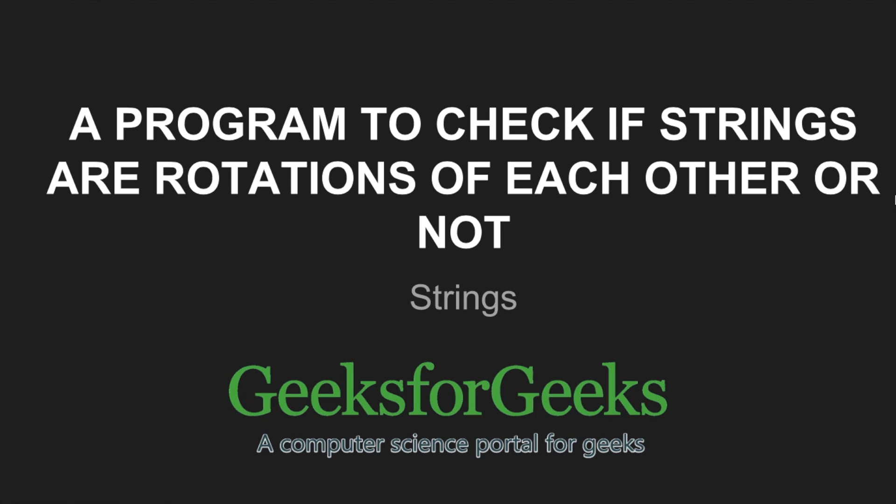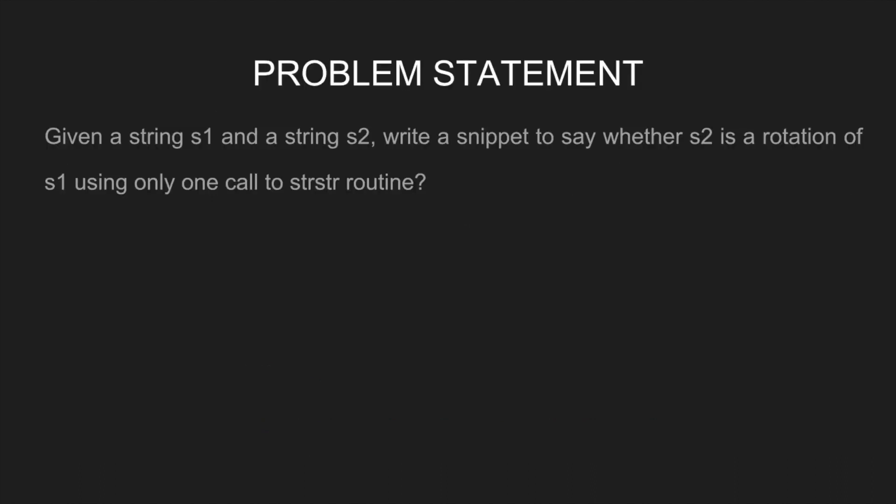Let's have a look at the problem statement. Given a string s1 and a string s2, write a snippet to say whether s2 is a rotation of s1 using only one call to strstr routine. For example, given s1 equals ABCD and s2 equals CDAB, return true. If s1 equals ABCD and s2 equals ACBD, return false.